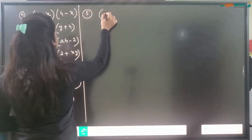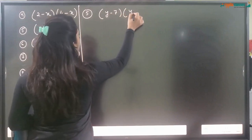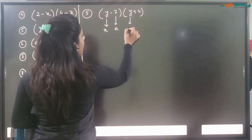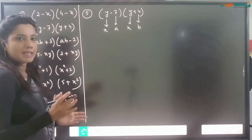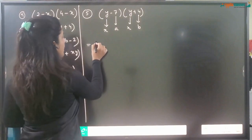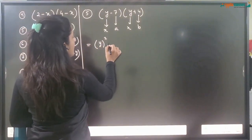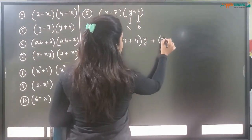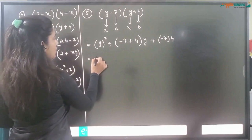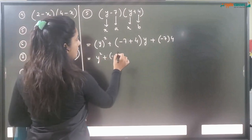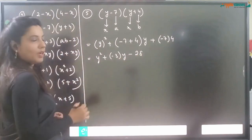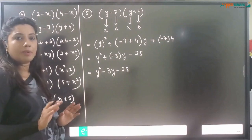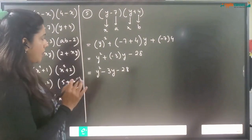Question number 5: (y - 7)(y + 4). Here x is y, a is -7, and b is 4. Using the formula: y² + ((-7) + 4)y + ((-7) × 4) = y² + (-3)y + (-28) = y² - 3y - 28. Please pause the video and try the sum on your own.